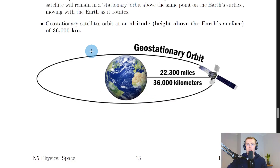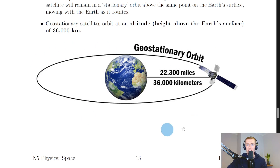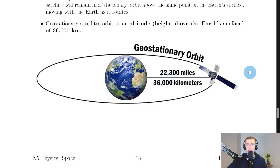Geostationary satellites orbit at an altitude — that is, a height above the earth's surface — of 36,000 kilometers. You can see this in the picture: the distance from the earth's surface up to the geostationary satellite is 36,000 kilometers, which is the same as 22,300 miles.